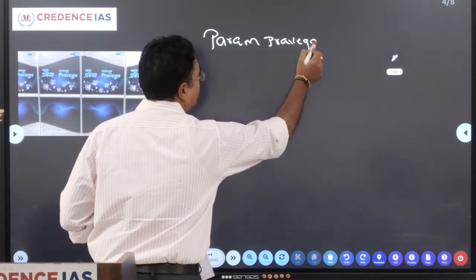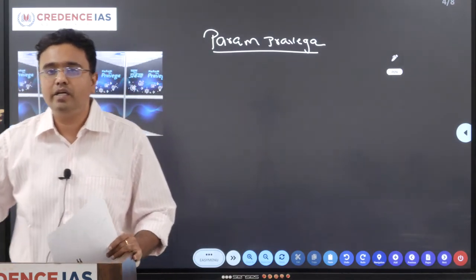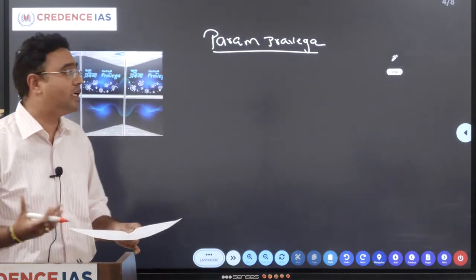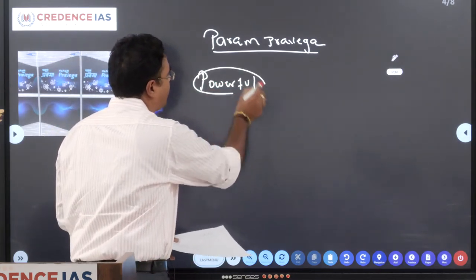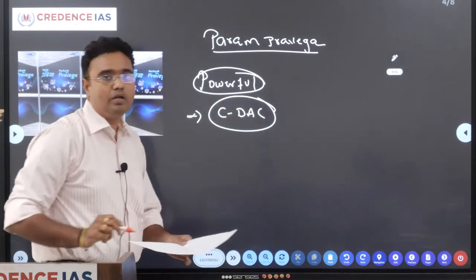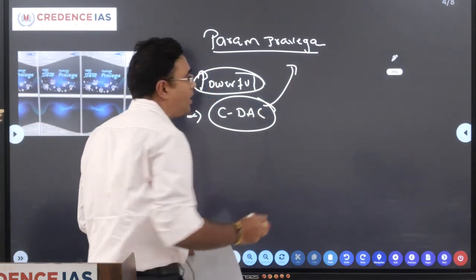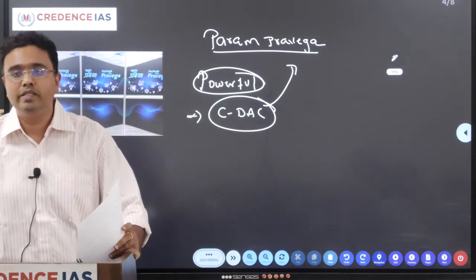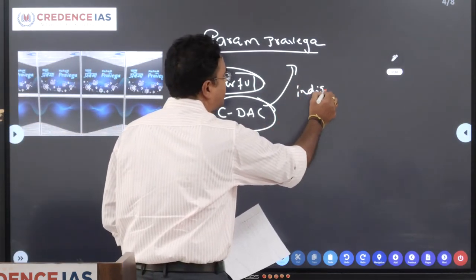Param Pravega is a supercomputer which has been recently installed in the Indian Institute of Science. It is considered as one of the fastest supercomputers of India. And on the academic institutions, it is considered as one of the most powerful supercomputers. This Param Pravega is developed by C-DAC, Center for Development of Advanced Computing. It is the organization behind the development of Param Pravega. The major components of Param Pravega, either the major of them are designed, built or manufactured indigenously.